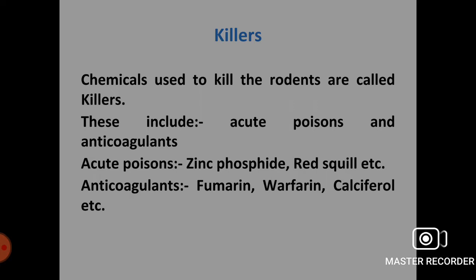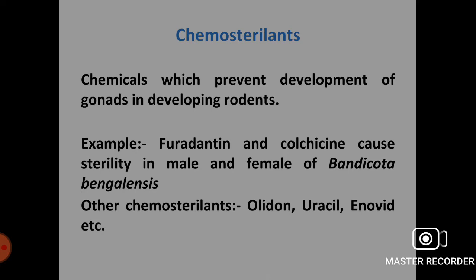Chemosterolants are chemicals which prevent the development of gonads in developing rodents. Examples include furadanthin and colchicine, which cause sterility in male and female Bandicota bengalensis. Other chemosterolant examples are olicone, uracil and enovid.